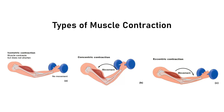There are mainly two types of muscle contraction: one is isometric and another one is isotonic. In isometric there is no movement, and in isotonic the contraction is subdivided into two parts: one is concentric contraction and one is eccentric contraction. In concentric contraction we can see the shortening of muscle during movement, and in eccentric contraction we can see the lengthening of muscle.